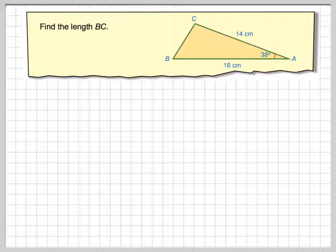Again, it's another problem for me, a non-right-angled triangle. So we've got the triangle ABC, and we're asked to find the length BC, which is this one here.